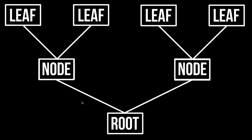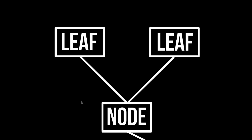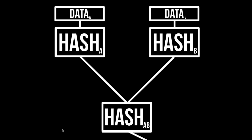Going back to give another view of the tree: we've got two leaves and then the node. The data is labeled with letters — we have data A and data B. We hash each one of those to get two different hashes. And then we hash those together. So we've got hash from data A and hash from data B, and we're going to hash those two hashes together.